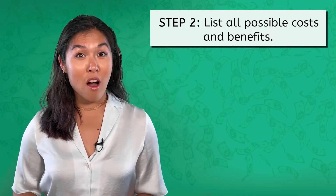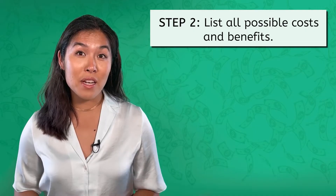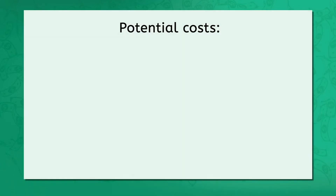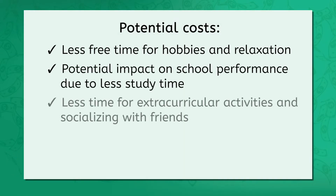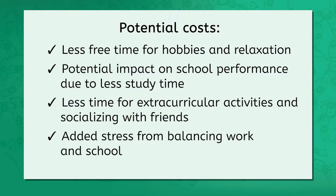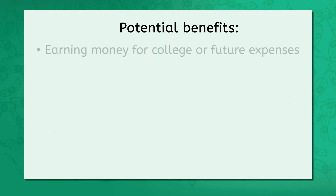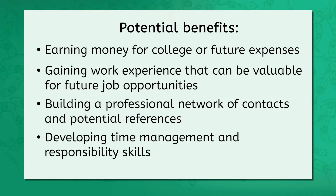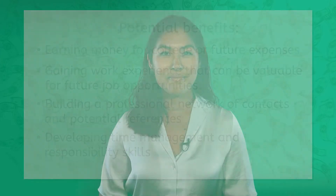Step two: list all possible costs and benefits. Take a moment to look at the list of costs and benefits that I came up with — they're listed on page five in your PDF. Did you catch that some of these are opportunity costs? They are things I would have to give up, like time to study for school. That's the beauty of the cost-benefit analysis: it helps us see the whole picture of what we'd be gaining and losing, not just the money part. At this point, I basically got myself a pros and cons list. But now is where the magic happens.